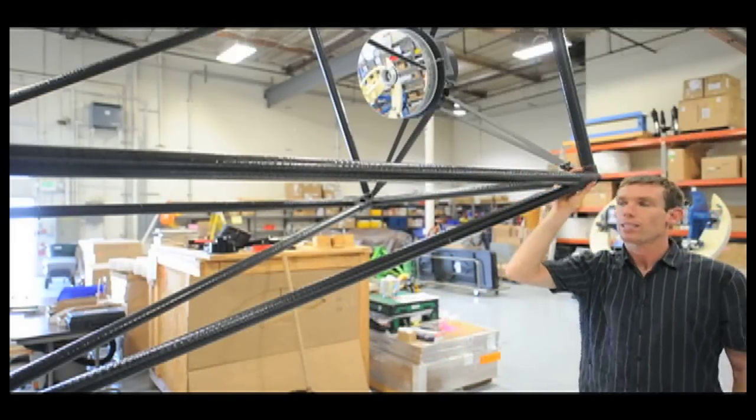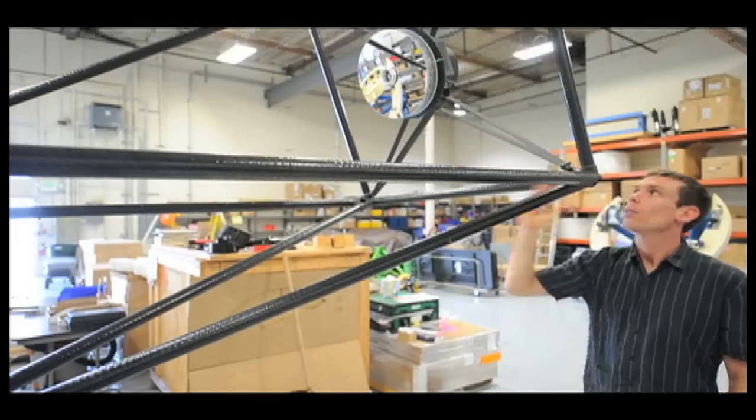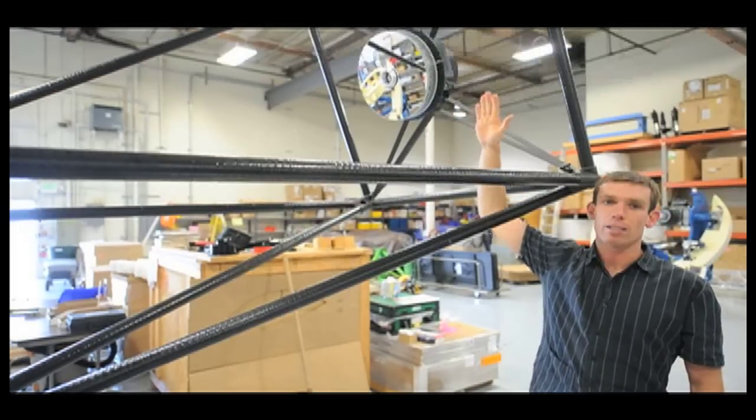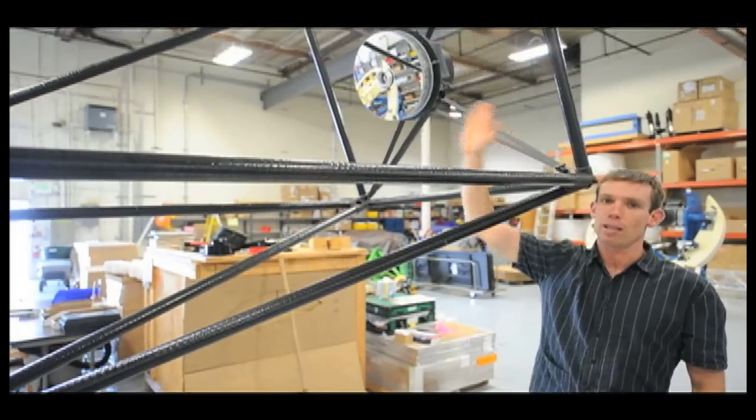We have aluminum castings that are machined for the nodes. There are Invar veins. And then the top end provides tip-tilt for collimation and then focus.